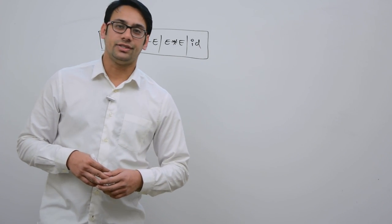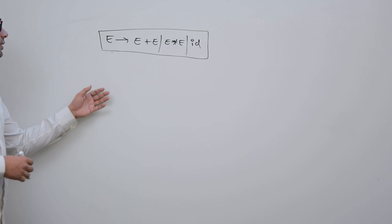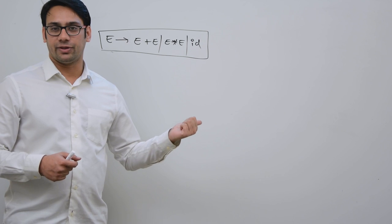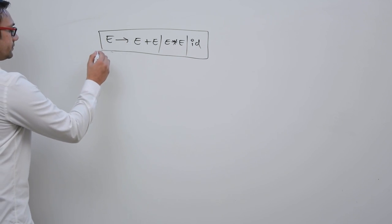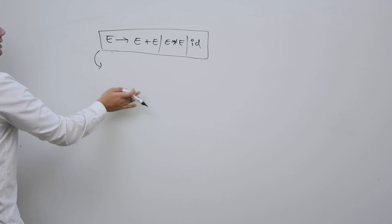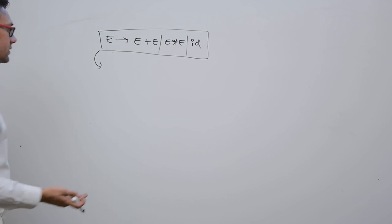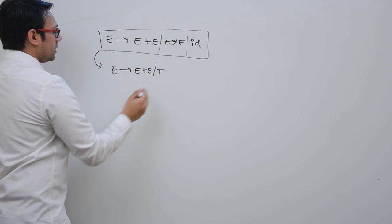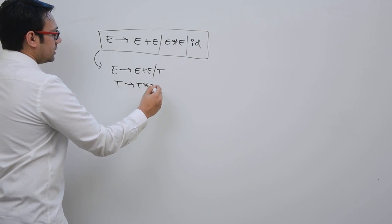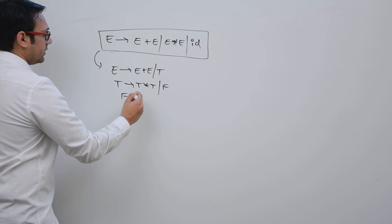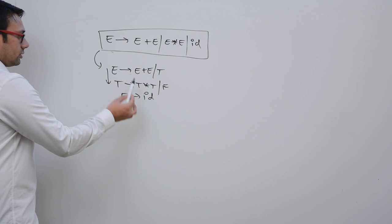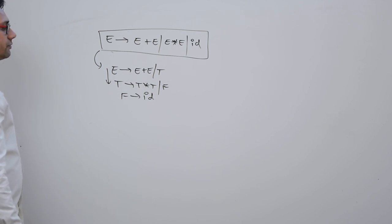Now let us make some small changes to this grammar. First we will make some changes to increase the precedence of multiplication. If we increase the level of multiplication, we can do E derives E plus A or T. T can derive T star T or F, and F can derive ID, because ID has the highest precedence. Here you can see the level of multiplication is more compared to the level of plus, therefore the precedence of multiplication is more.